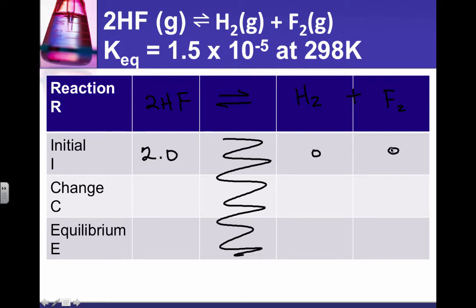So I have 2HF, and then here's my equilibrium arrow, so no numbers are going into this column. Then I have H2 hydrogen plus F2 fluorine, diatomic of course. We were given an initial value of 2 molar HF. We're starting with no reactants because the reaction hasn't proceeded. We haven't made any of those yet. I know that I'm going to make some product, but for every one H2 that I make, I have to lose 2 HFs to do it, so I'm going to put a minus 2x here.